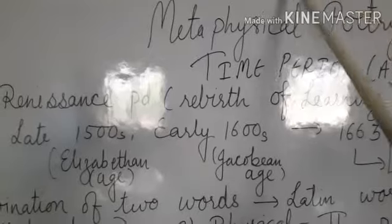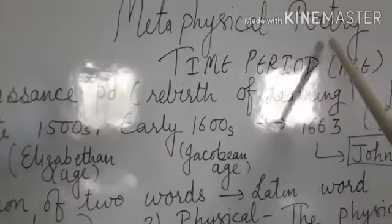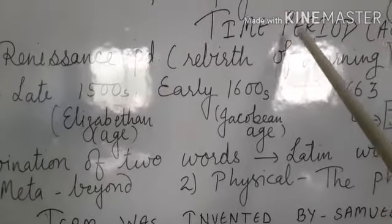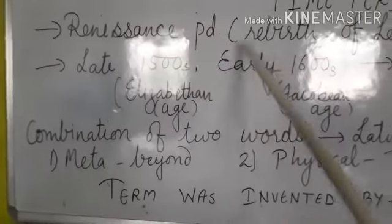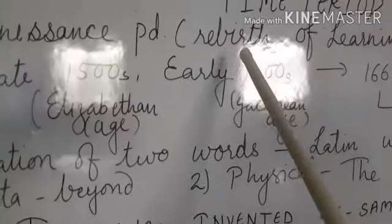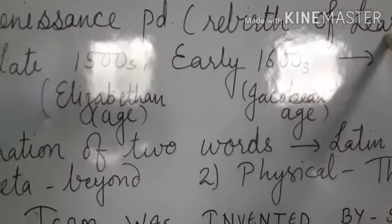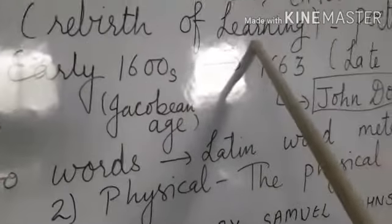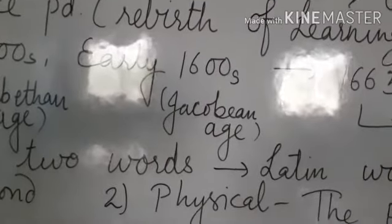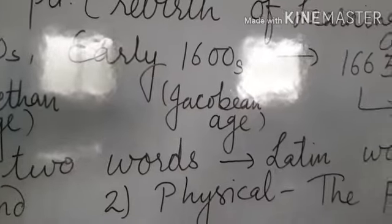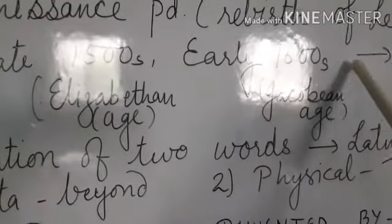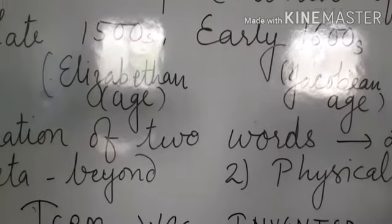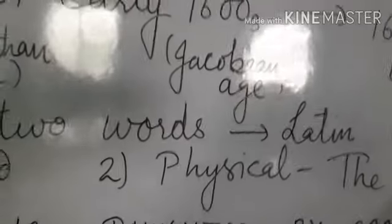You have read about metaphysical poetry, which poetry is included. First of all, if you look at the summary, we can say that the time period was the Renaissance period. It's the time period of learning. In 1663, who was John Donne, who introduced this metaphysical poetry. But I didn't know that I had so much work done.